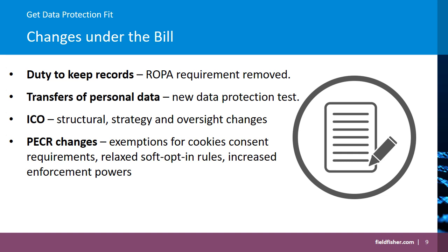The bill also proposes to scrap the requirement to maintain records of processing activities, or Article 30 records, except for those controllers or processors carrying out high risk processing activities, although clarity on what constitutes high risk processing activities is still pending. There are also changes proposed to transfers of personal data out of the UK. The bill provides assurance that transfer mechanisms relied on prior to the bill coming into effect will continue to be valid, but introduces a new threshold for determining adequacy of third countries — the data protection test — which determines whether a jurisdiction offers protections materially lower than those under the UK GDPR, a slightly different test to that under the EU GDPR.